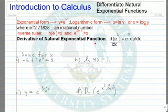Finally, we have the derivative of the natural exponential form. Derivative of e to the u is e to the u, but then we have to apply the chain rule du dx.